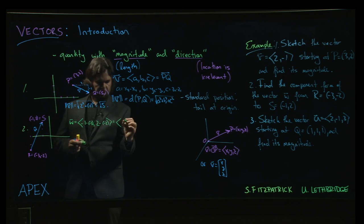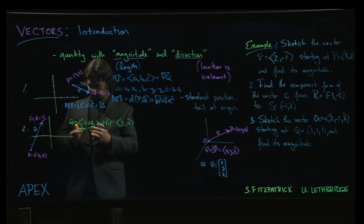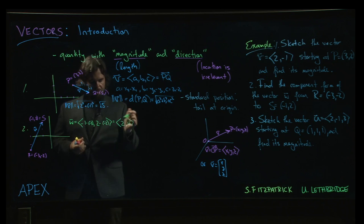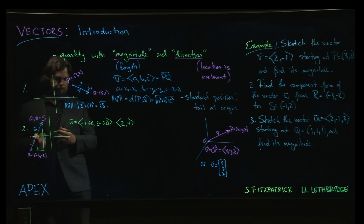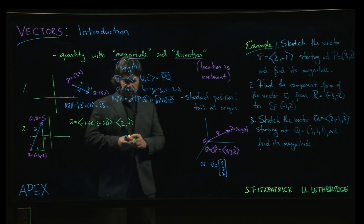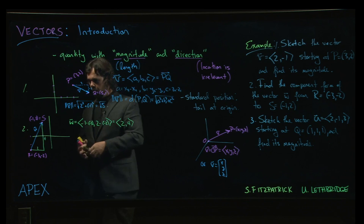Okay. So we get minus 1 plus 3 is 2, minus 2, minus minus 2. So 2 plus 2, or 2 plus 2, sorry, 2 minus minus 2. We get 4. 2 and 4. And again, all that's really telling us is that to get from the point R to the point S, we have to go over by 2 units and up by 4. And again, if we wanted to get the magnitude, we can use the Pythagorean theorem to get the magnitude of that vector.